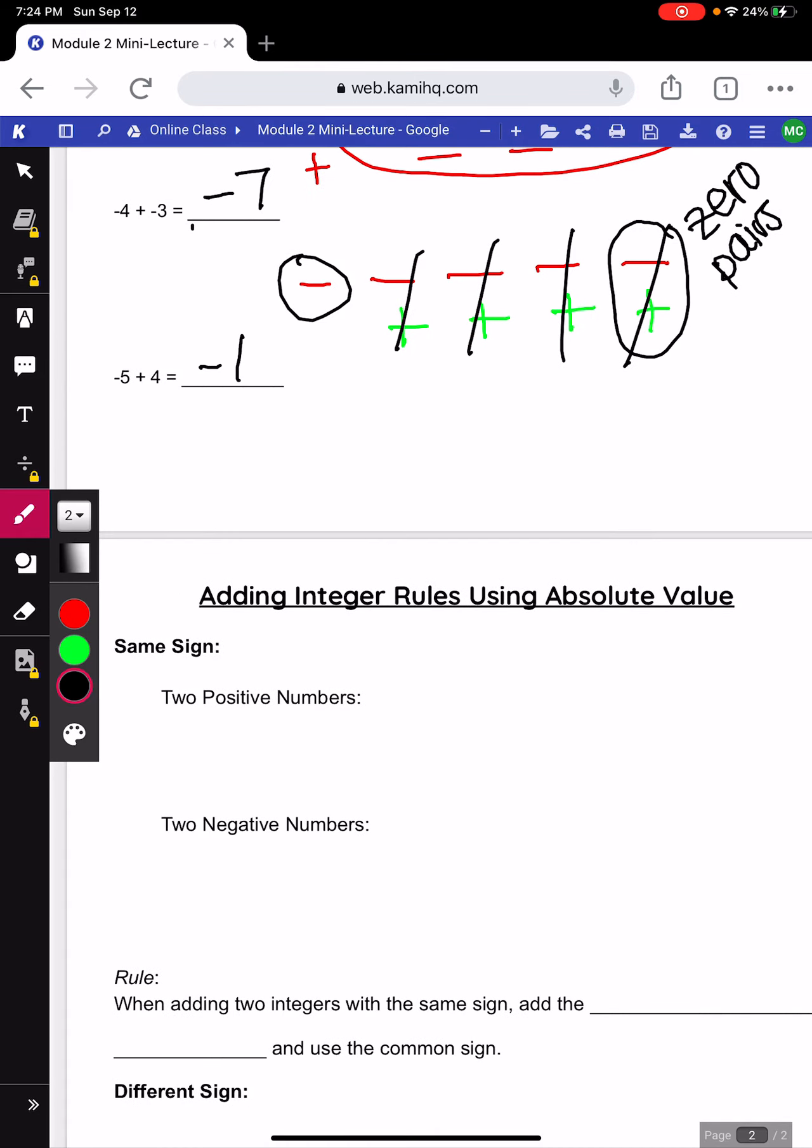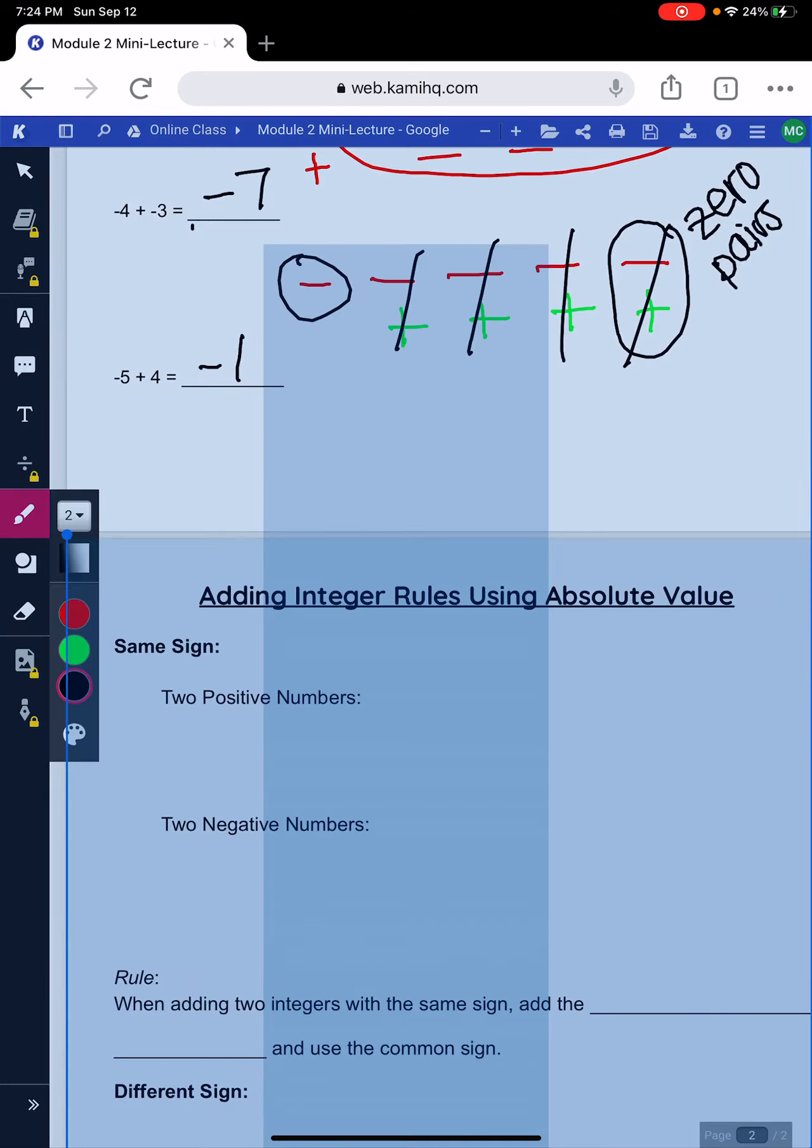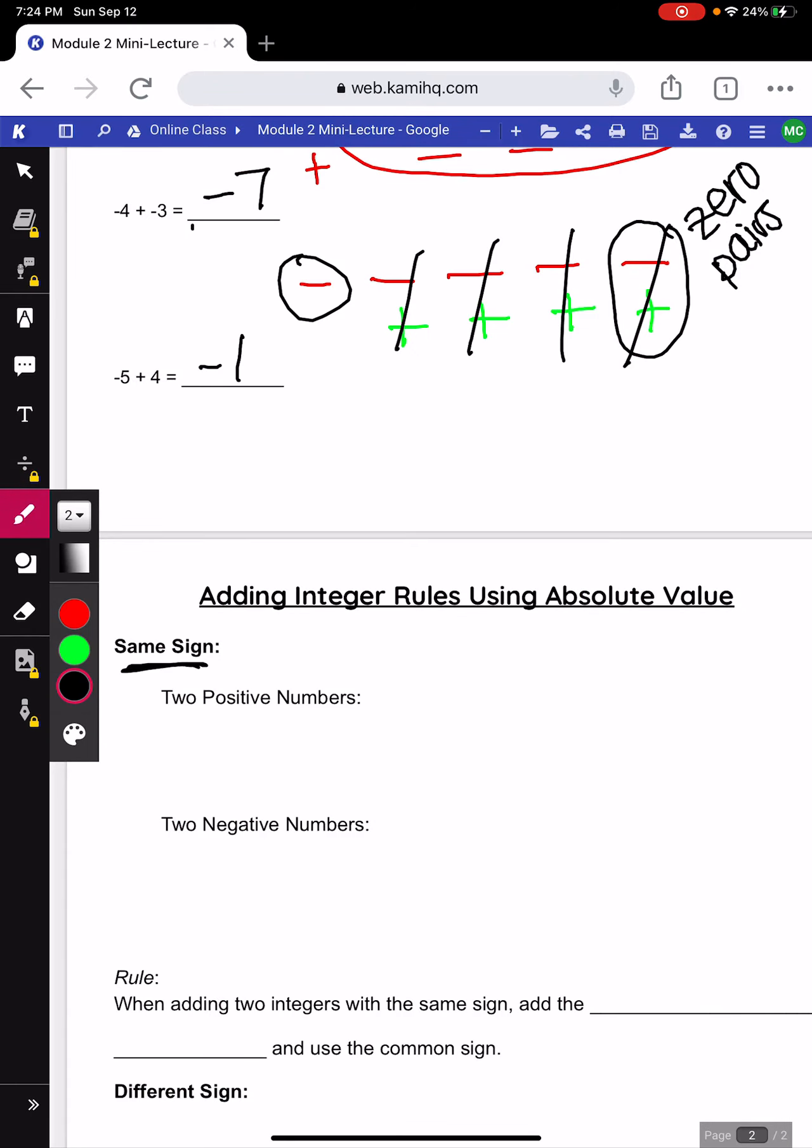Now we are going to look at some integer rules that will help us speed up the process of adding integers. So, we're going to look at first integers with the same sign. So, for example, two positive numbers.